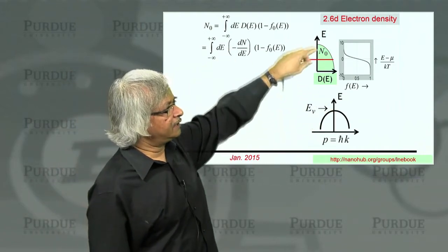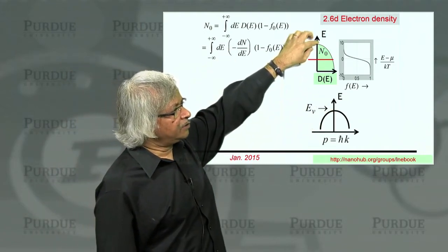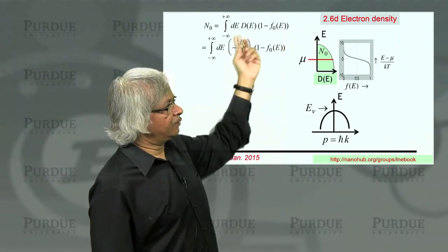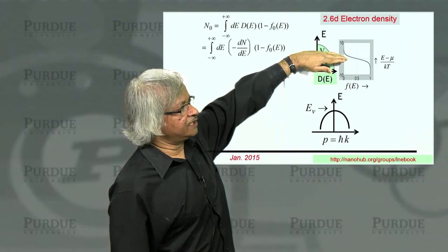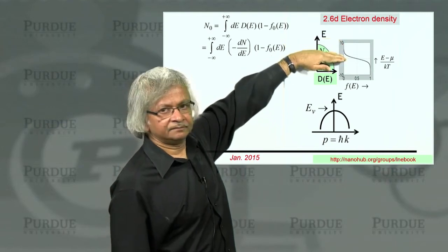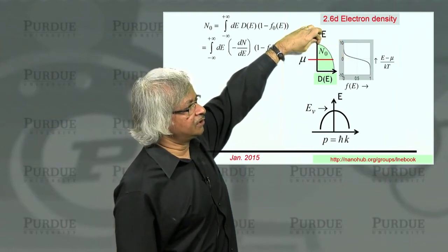Why is that? Well, because you see, now when you talk about N of E, what it represents is all the states whose energy is higher than E because momentum is zero right here.